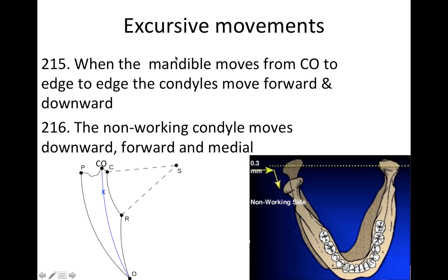When the mandible moves from centric occlusion — so here we've got Posselt's envelope, I have no idea how to say that by the way — we're going to start from CO, and then when we go edge to edge, the condyles move forward and downward. You can see in the envelope that when the mandible moves from centric occlusion to edge to edge, the mandible is moving down and forward.